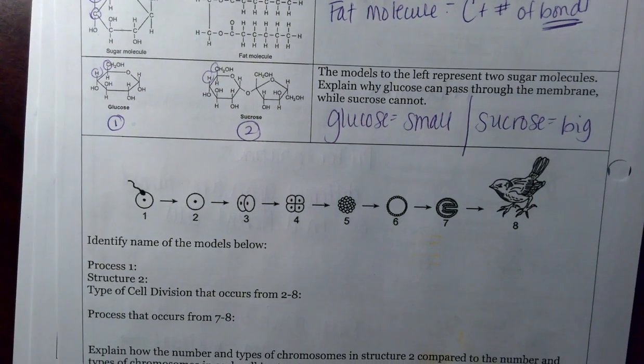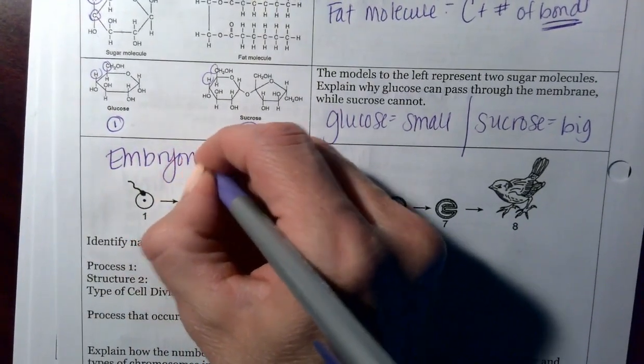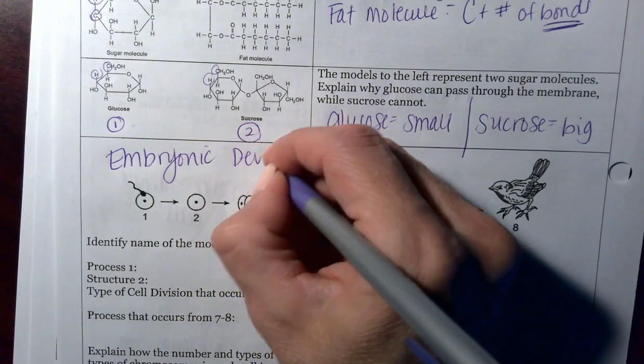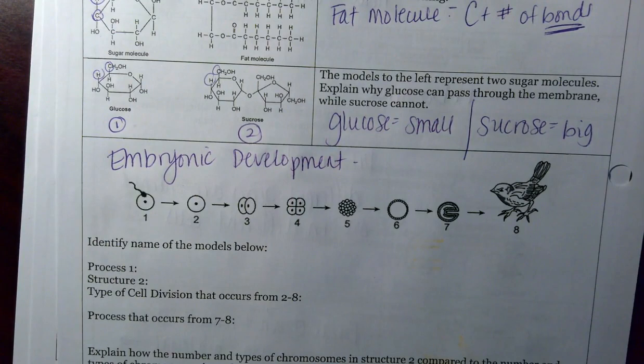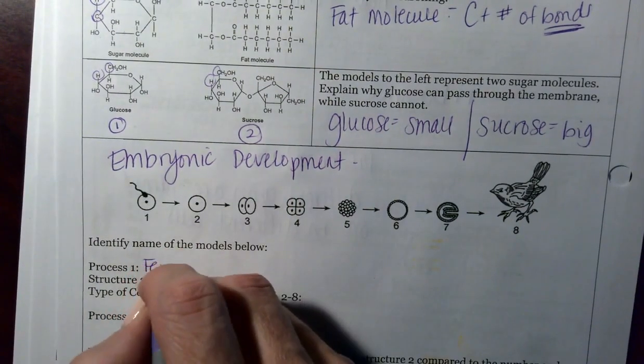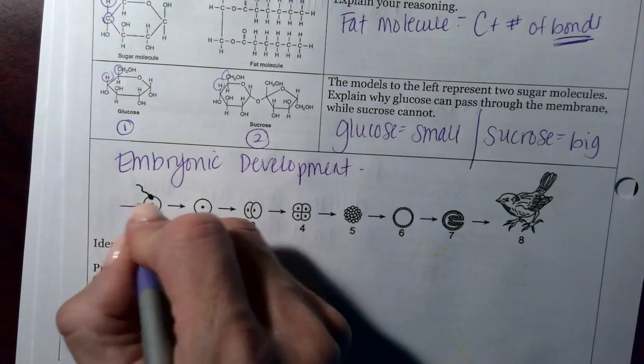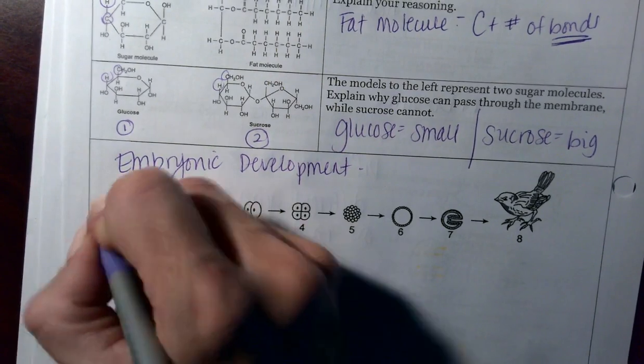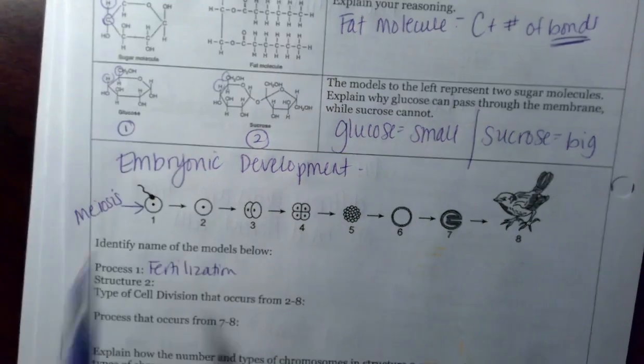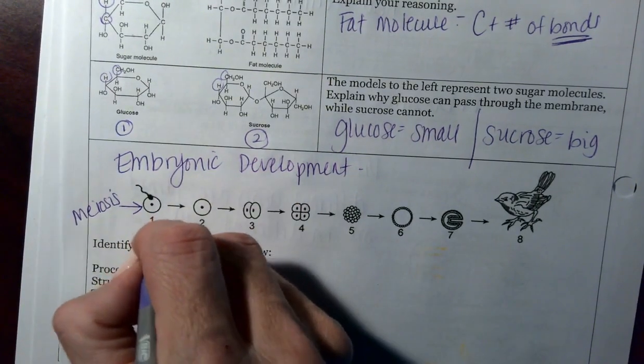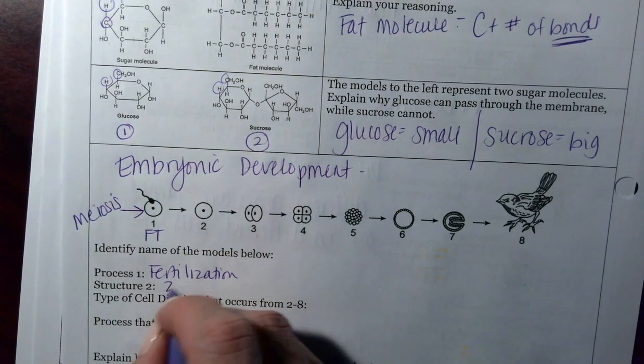Over here, we have embryonic development. I would write that on the top because apparently I don't have that anywhere. Process one, sperm and egg come together. That's fertilization. If they asked how did the sperm and egg get made, like before, right? That would be meiosis occurs first, sperm and egg meet, where do they meet? That's going to be my fallopian tube. Again, refer back up to the top if you need to. Number two is called a zygote.